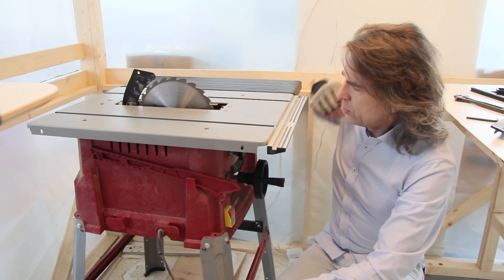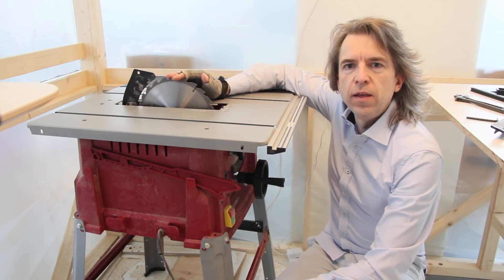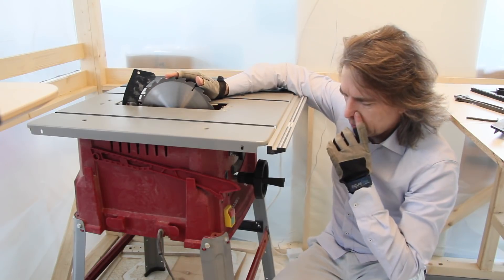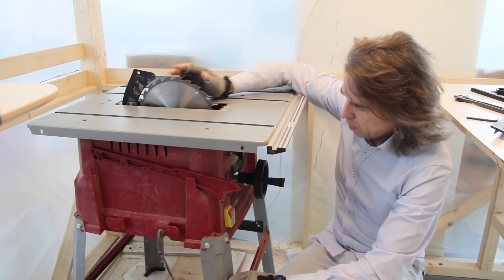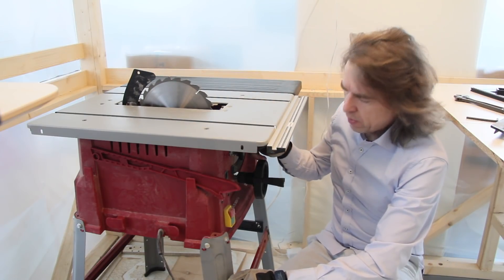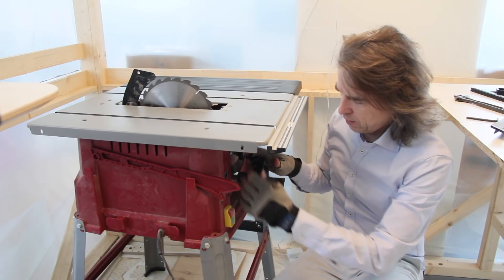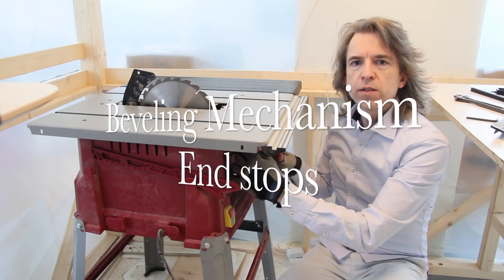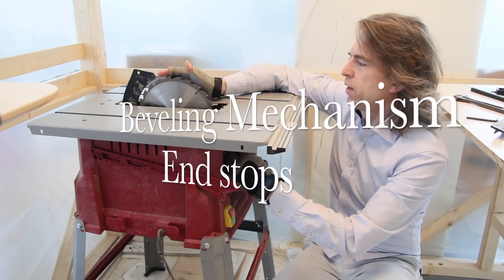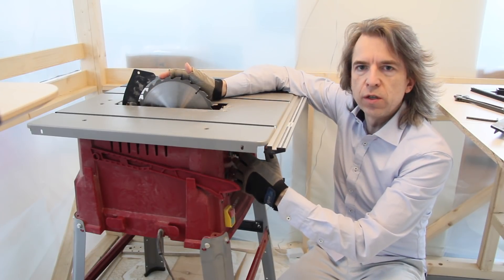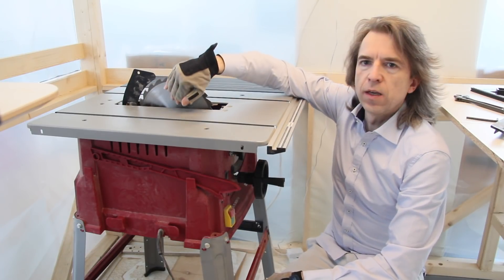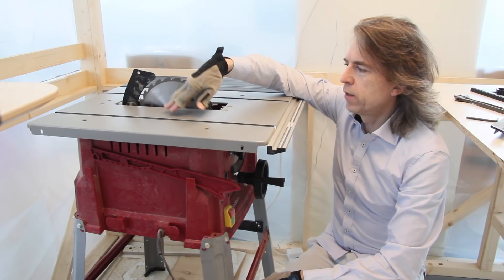What I did to adjust the blade on this Einhell 2025 table saw was that I started off by loosening this end stop here and adjust it so that it's at its zero position when the blade is perpendicular or square to the table.